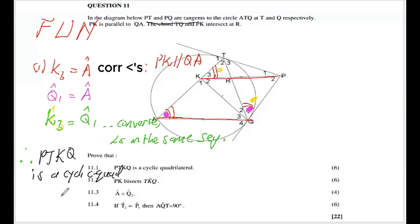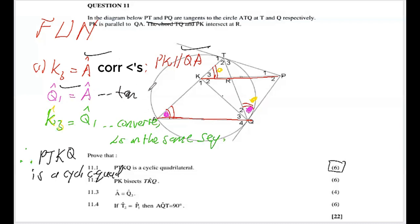Don't be afraid of the six marks. Remember, the marking is statement and reason for each step. The reason for Q1 equaling A was tan-chord. Then we have the conclusion: PTKQ is a cyclic quad. With statement-reason format throughout, you get your six marks — clean and straightforward.